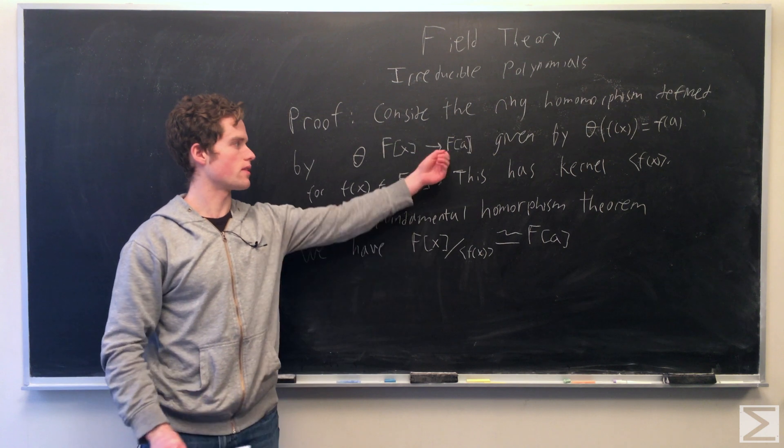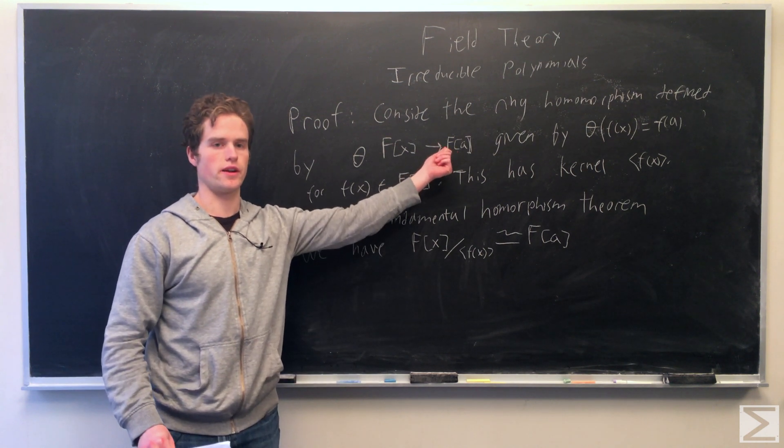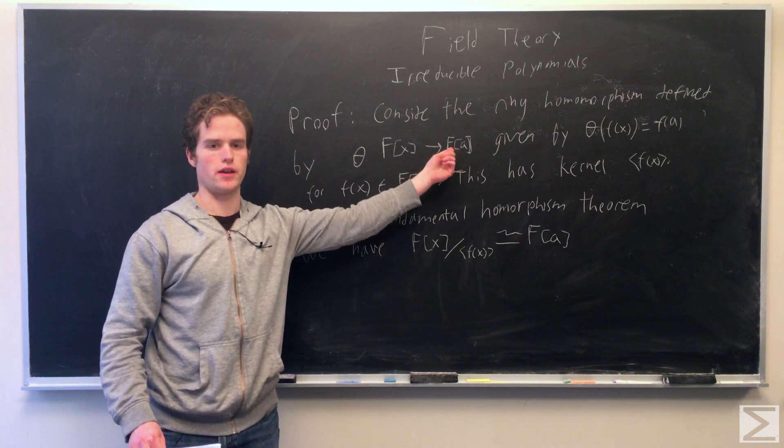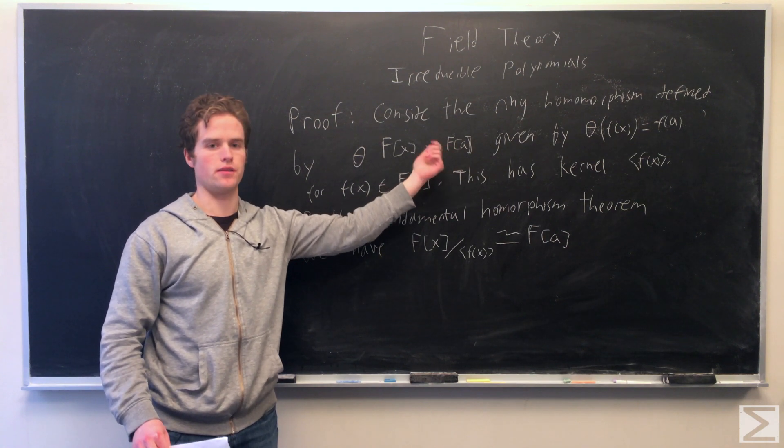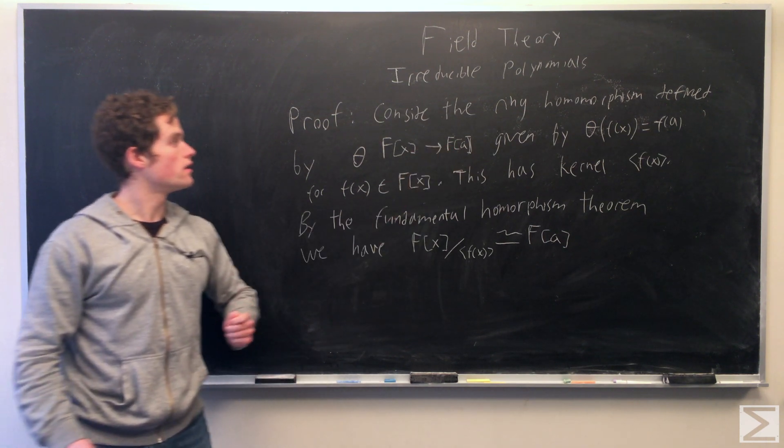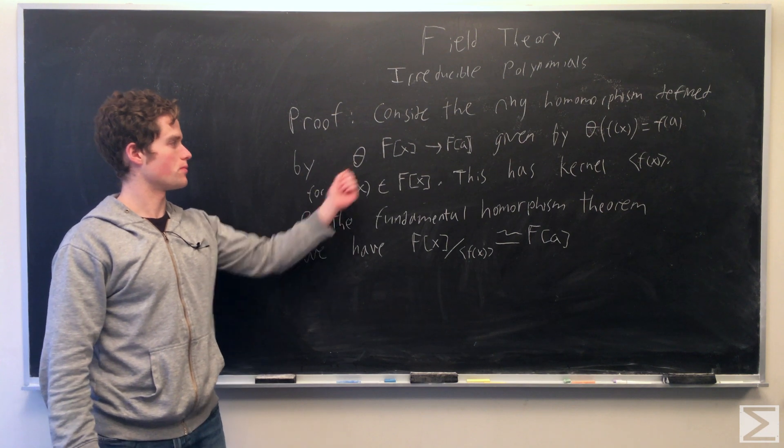So for our proof, we can think of F with a attached as just the ring with a attached. So it's all the powers of a over the coefficients added, then multiplied together. And so we're going to think of the ring homomorphism theta.